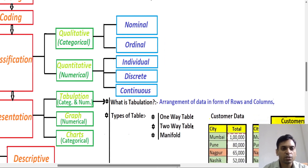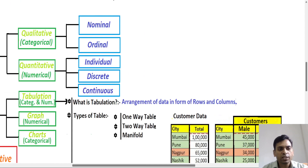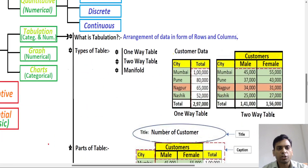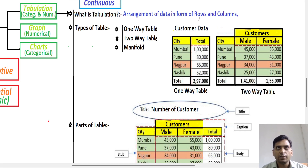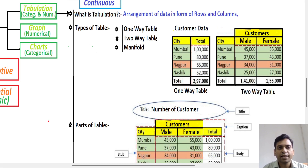Tabulation simply means the arrangement of data in the form of rows and columns — we collect data and put it into a table as per rows and columns. There are three types of table: first is a one-way table, second is a two-way table, and third is manifold.